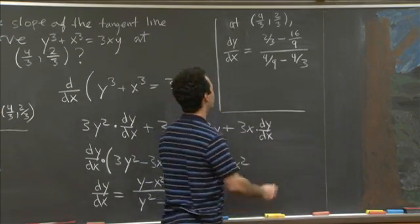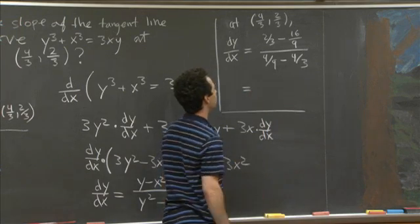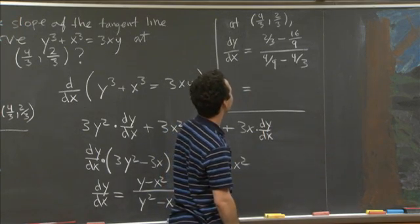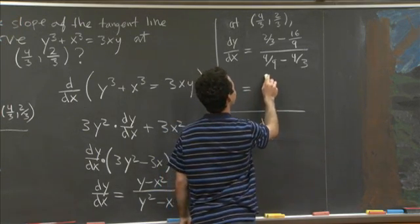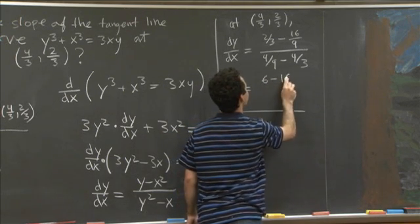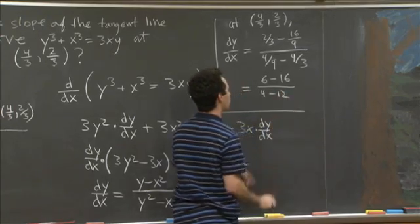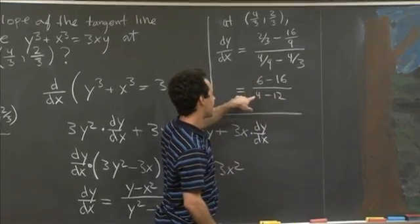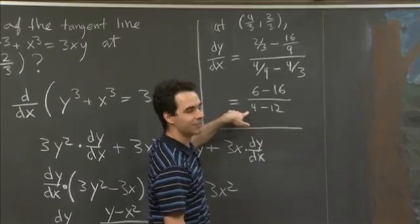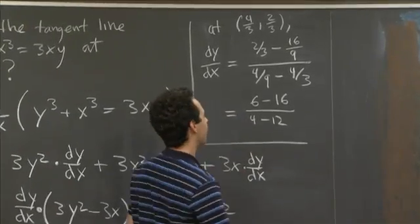All right, so we have a little bit of rational number arithmetic here. Maybe I'll multiply top and bottom through by 9 to get 6 minus 16 over 4 minus 12. So this is negative 10 over negative 8, which is 5 over 4.